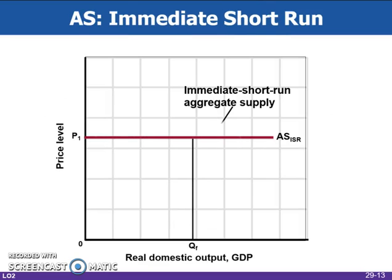This figure illustrates aggregate supply in the immediate short run. The aggregate supply curve, ASISR, is horizontal at the economy's current price level, P1. With output prices fixed, firms collectively supply the level of output that is demanded at those prices.